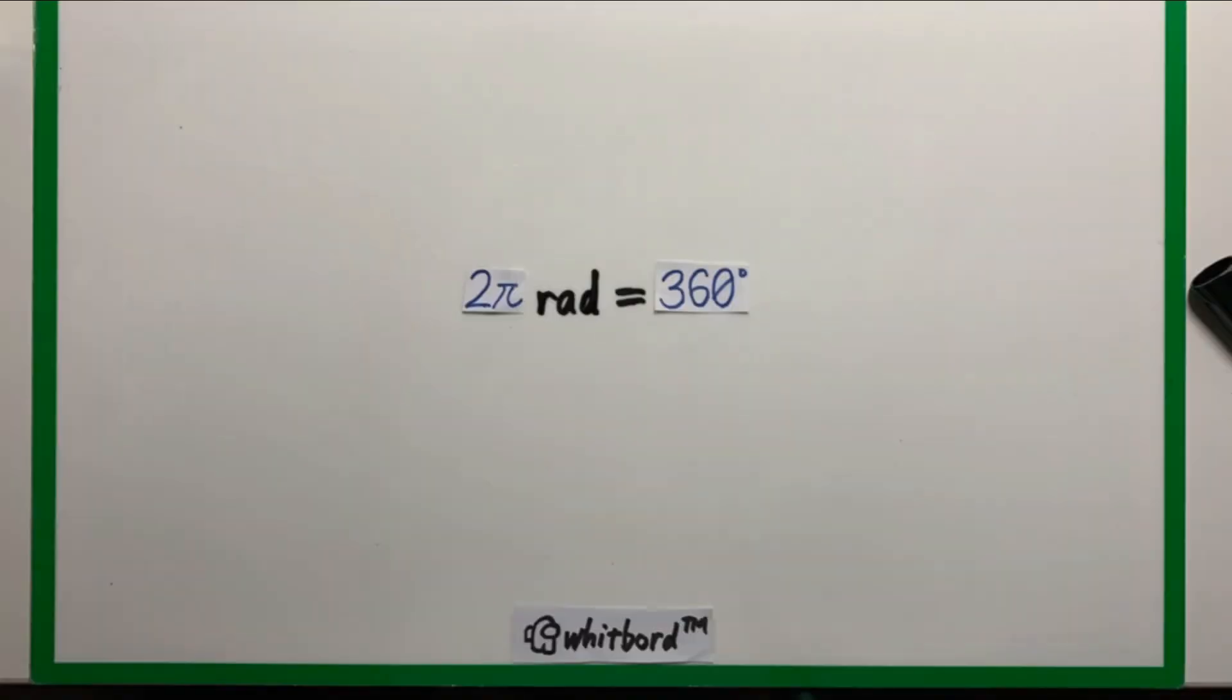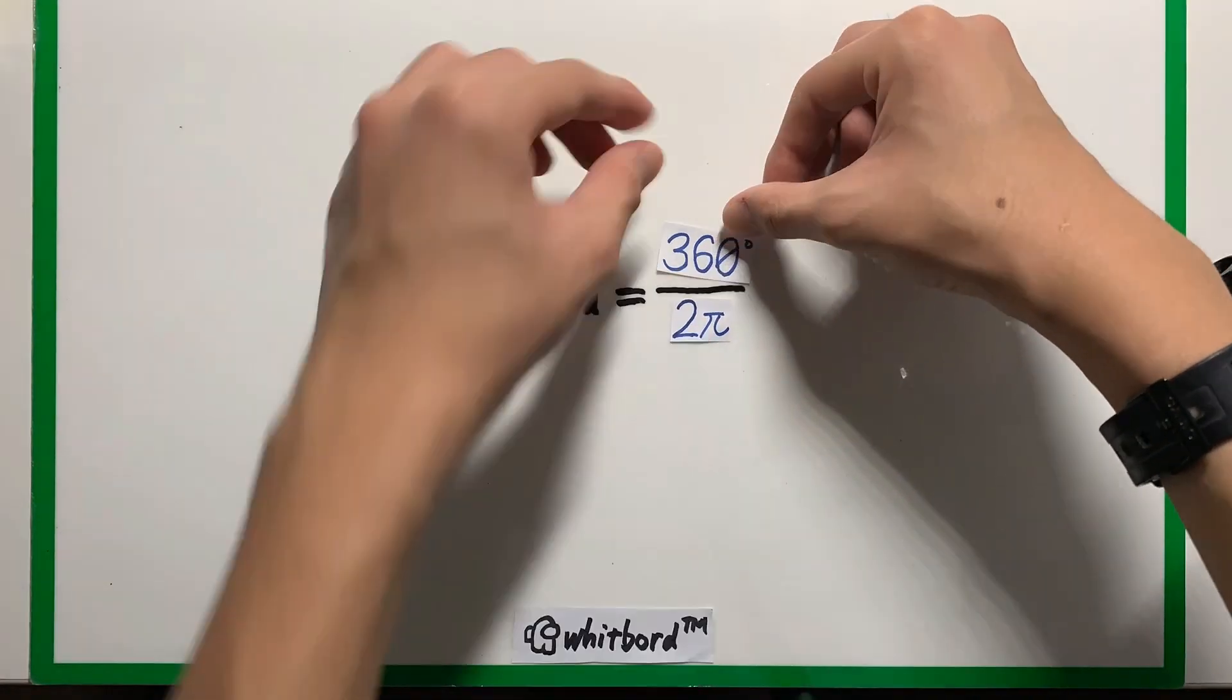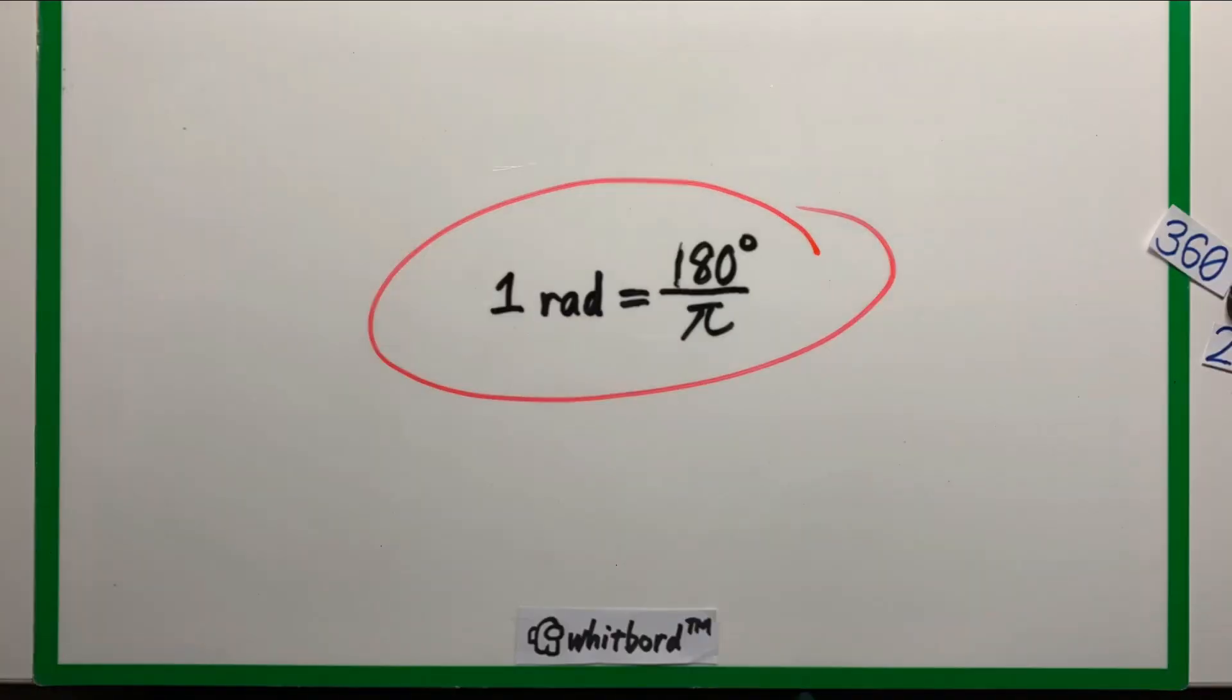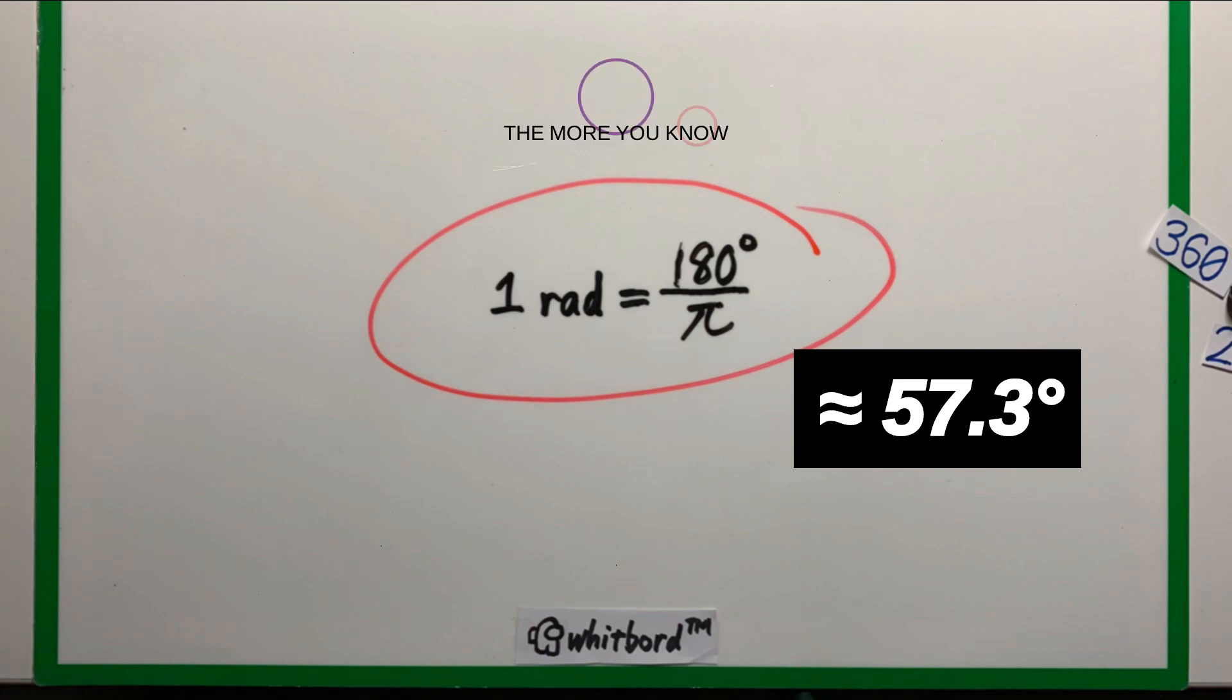From this, we can find the relation between the degree and the radian, which is about 57.3 degrees. The more you know.